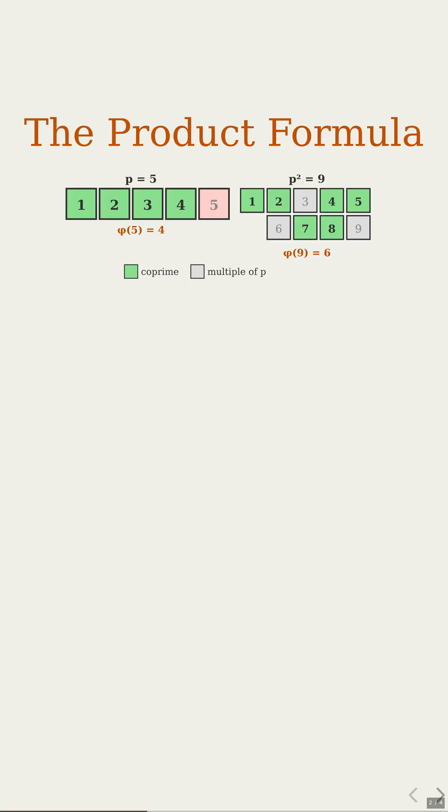Start simple. If n is a prime p, then every number from 1 up to p minus 1 is co-prime to it, so phi of p is just p minus 1.